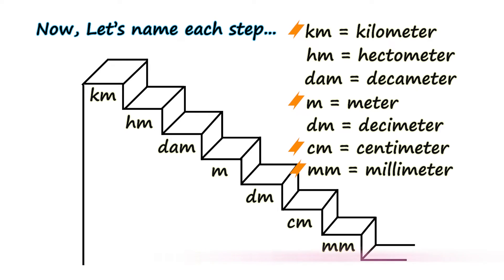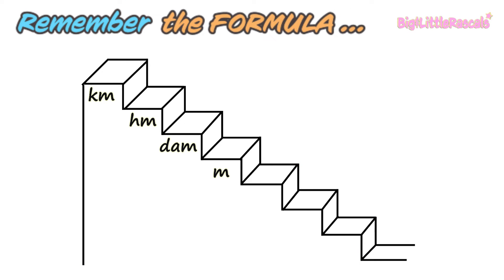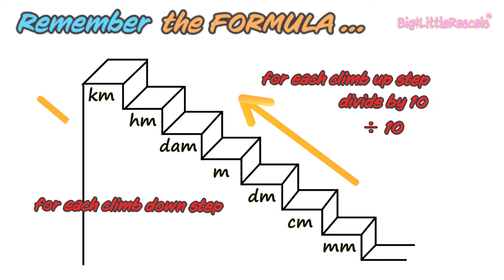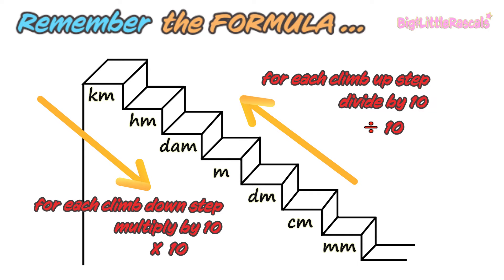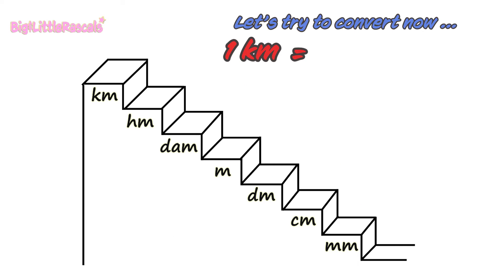Next, you need to remember the formula: each step you climb up means you divide by 10, and each step you climb down means you multiply by 10. Let's try to convert now!